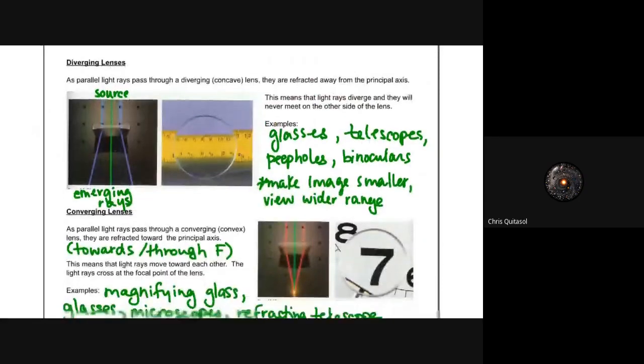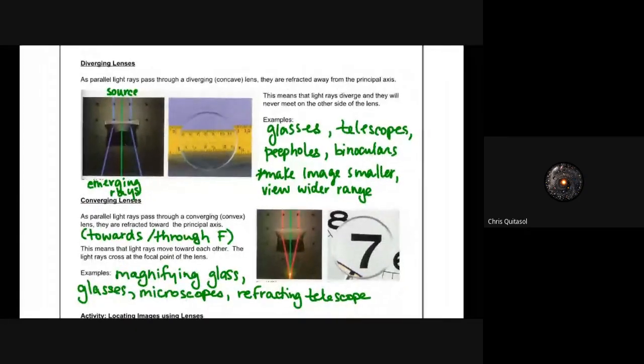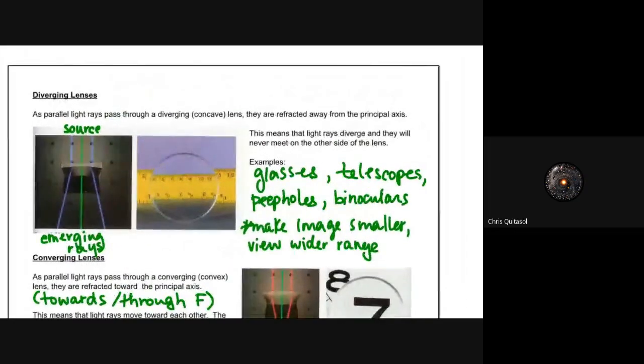What are diverging lenses used for? As light that is parallel to the principal axis travels through that diverging or concave lens, they are refracted away from the principal axis. This means that light rays diverge and will never meet on the other side of the lens. Glasses, telescopes, peepholes, binoculars—they make an image smaller and increase the view range by allowing these diverging rays to serve their purpose.